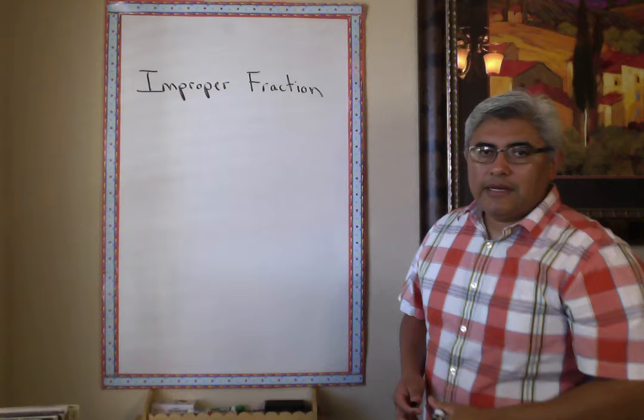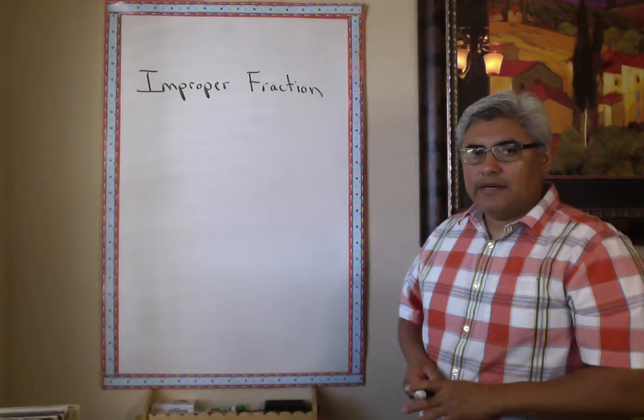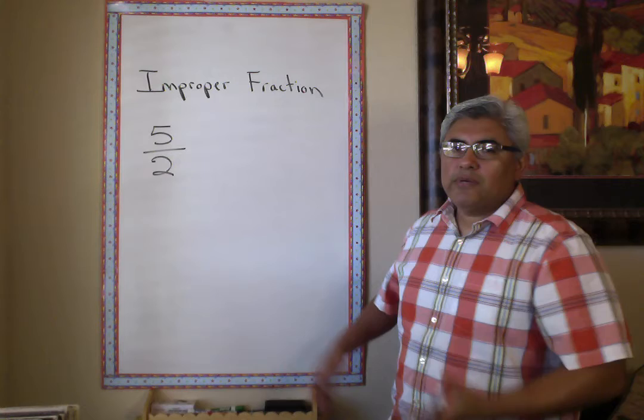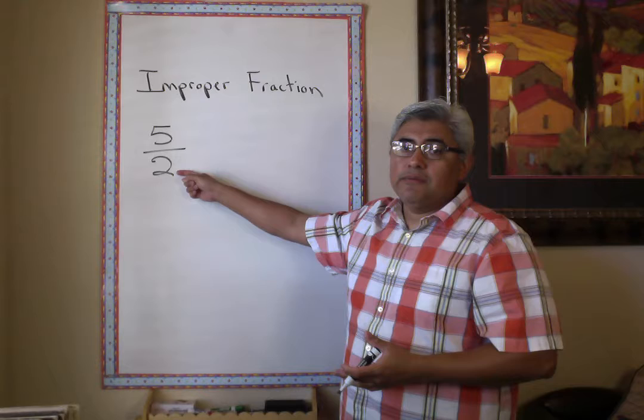So what's an improper fraction? We've talked about regular fractions, but there's something wrong with an improper fraction. Your numerator is always going to be bigger than your denominator. That's why it's called improper.